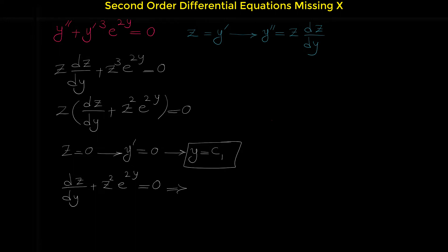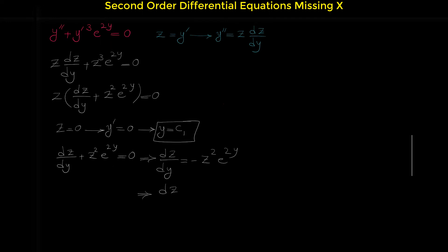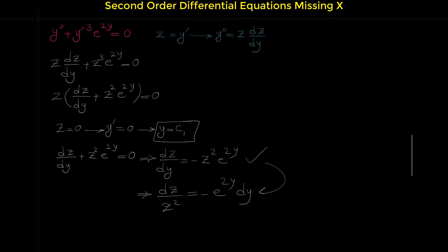Here we want to separate variable z from variable y. If we bring the z squared e to the 2y term to the other side of the equation, we have dz over dy equals negative z squared e to the 2y. We bring z squared to the denominator and bring dy across, so now variable z and variable y are separated and we can integrate both sides to find z.